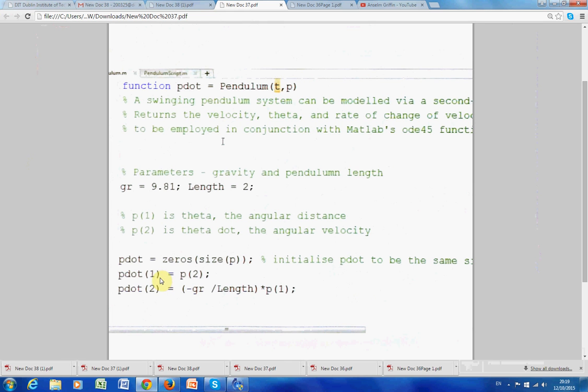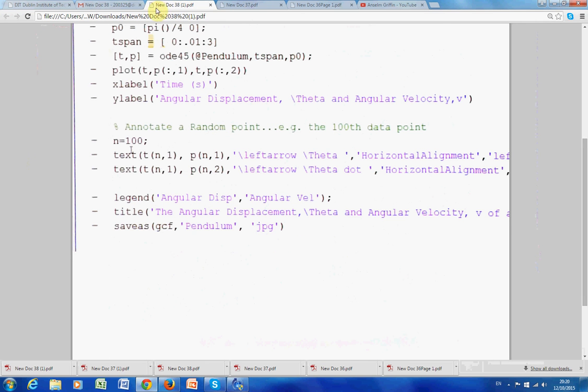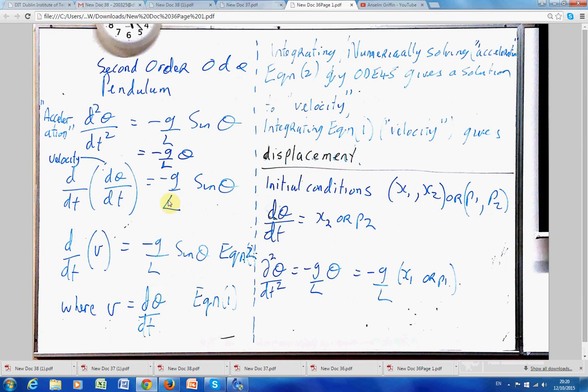And for p dot 2, that's the acceleration. It's minus g. Go back here. Sorry for jumping. It's minus g over l theta. Minus g over l theta.